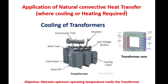Applications of natural convective heat transfer are generally where cooling or heating is required. One example is the cooling of a transformer. Observe the three-dimensional view of an electrical transformer. An electrical transformer consists of a transformer tank and transformer radiator, including cooling tubes. The transformer tank consists of electrical windings and transformer core. The objective of transformer cooling is to maintain an optimum operating temperature inside the transformer — generally 50 to 60 degrees Celsius under normal load conditions.